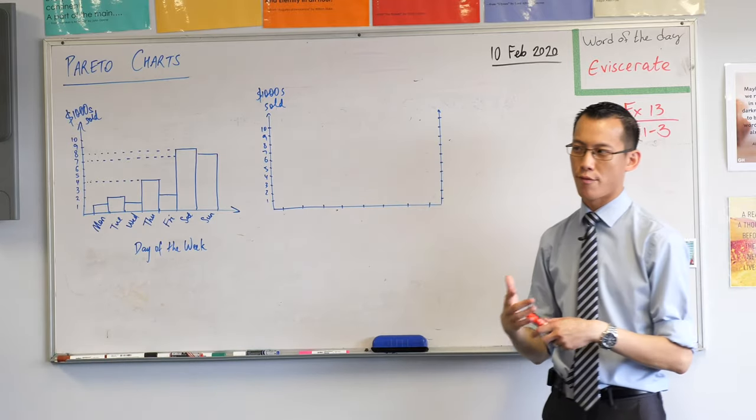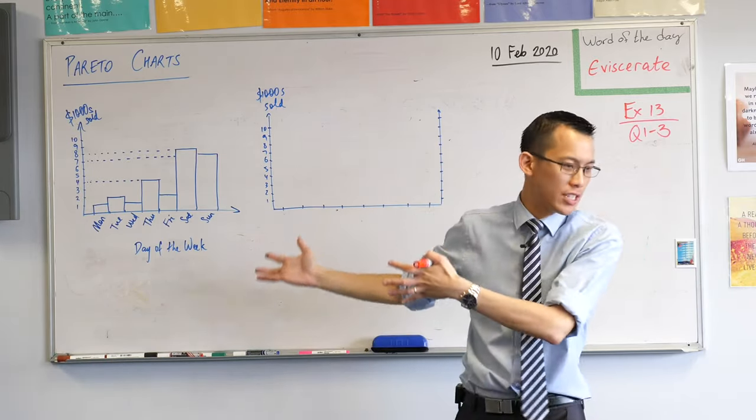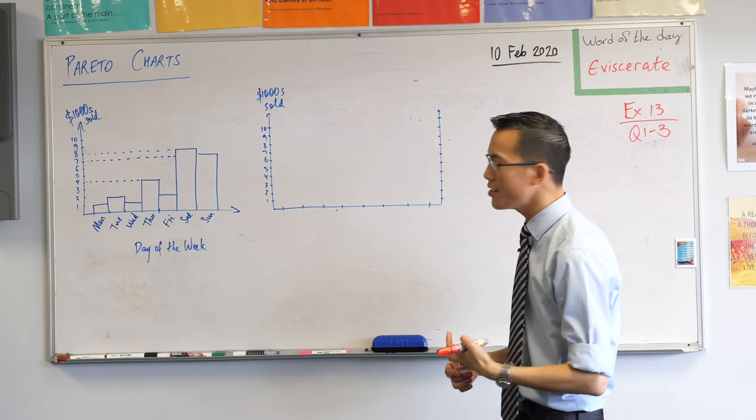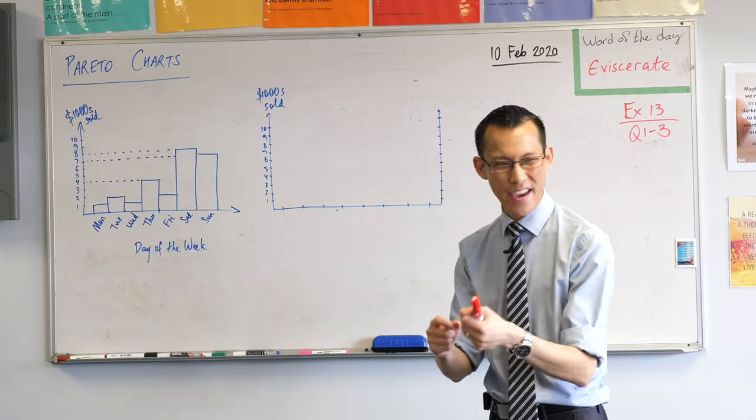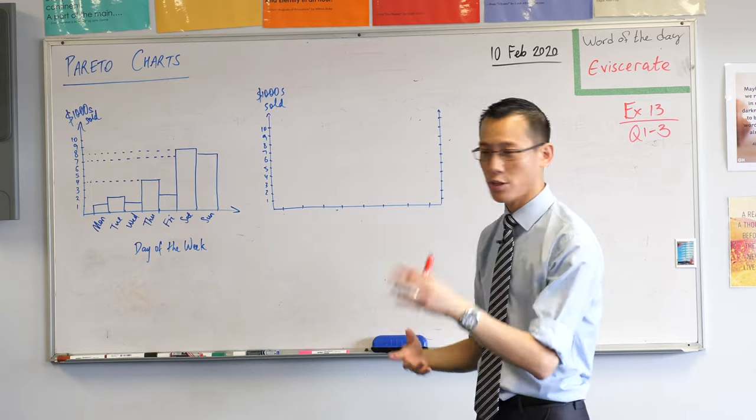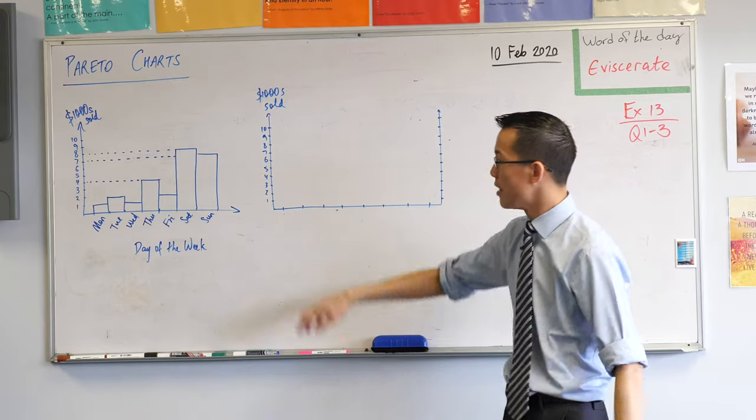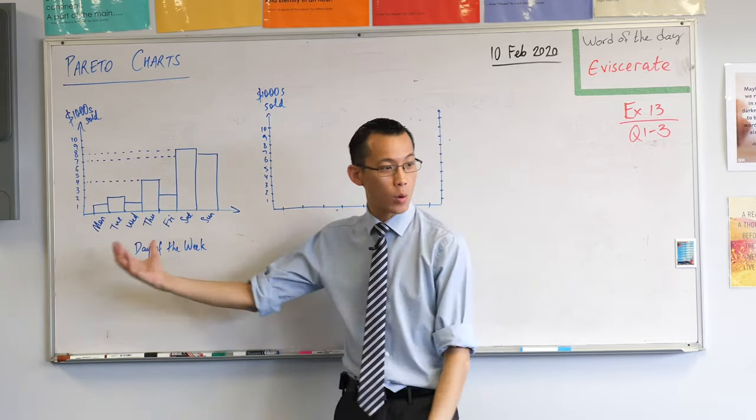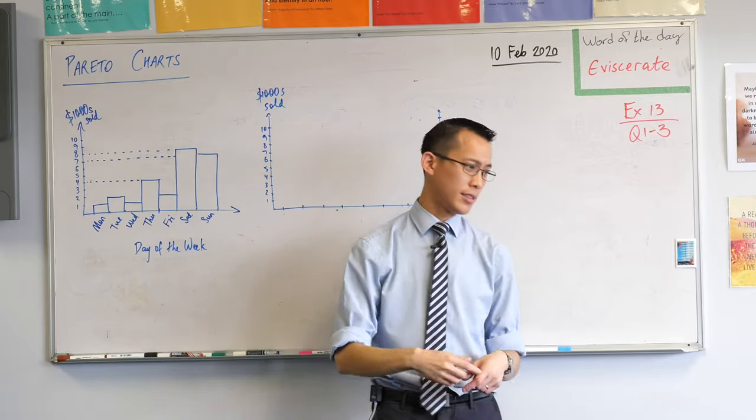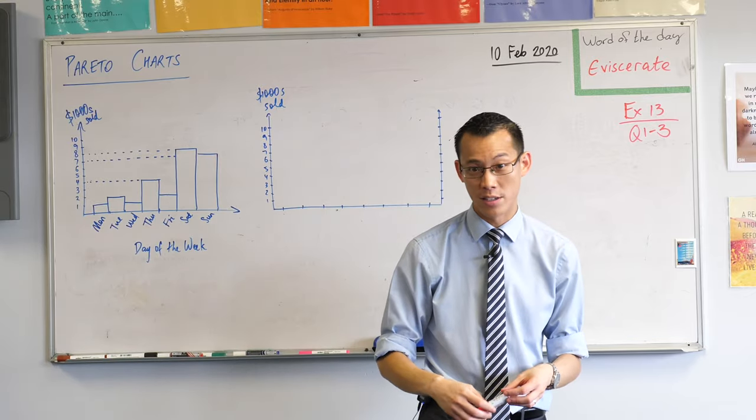Pareto charts are a different way of representing frequency distributions in order to help us understand particular kinds of effects and what's important. This is all about understanding what's important in a situation, can we rank this in some way and make good decisions off the basis of it.